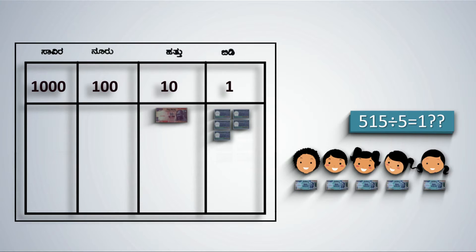Move one step right to the tens place. There is only one note of 10 rupees and one note cannot be divided amongst 5. So, the students do not get any 10 rupee notes. In other words, 0 tens are distributed.